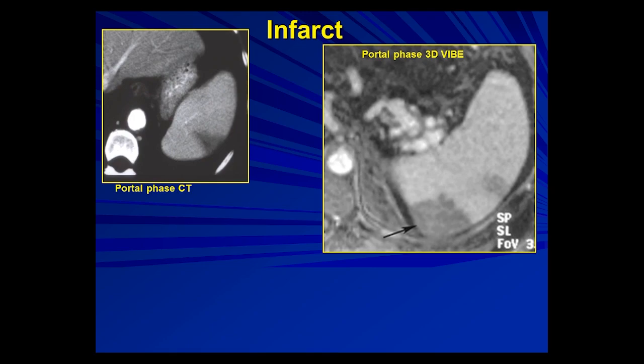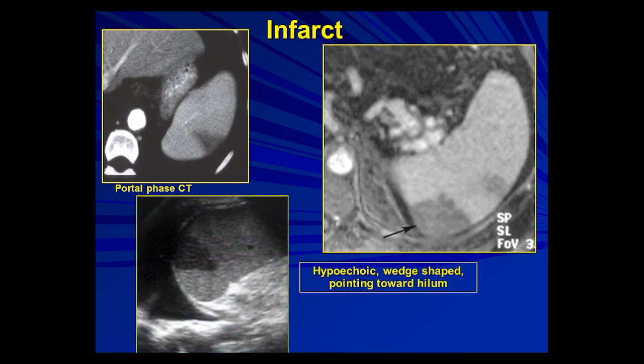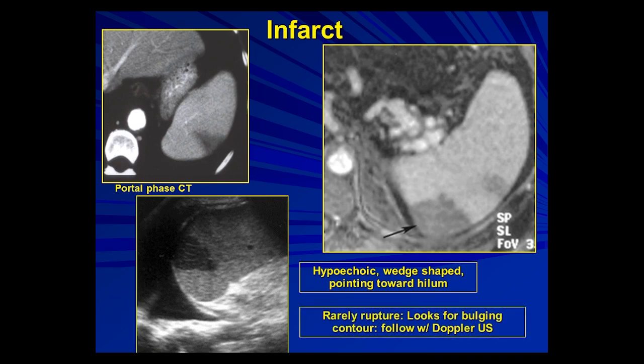Infarcts are one of the common things we may see as incidental findings on CT in asymptomatic individuals, but they can also present acutely. Experimental data has shown that most infarcts are actually round or irregular, and most of them heal and disappear. You can suggest infarct when the lesion has a straight-line sign or a wedge-shaped configuration — on CT, MR, or ultrasound — with a wedge pointing towards the hilum. If you have acute left upper quadrant symptoms, particularly if you see bulging of the contour or vascular flow phenomena on color Doppler within the lesion, that's an acute infarct, which has a propensity to rupture.